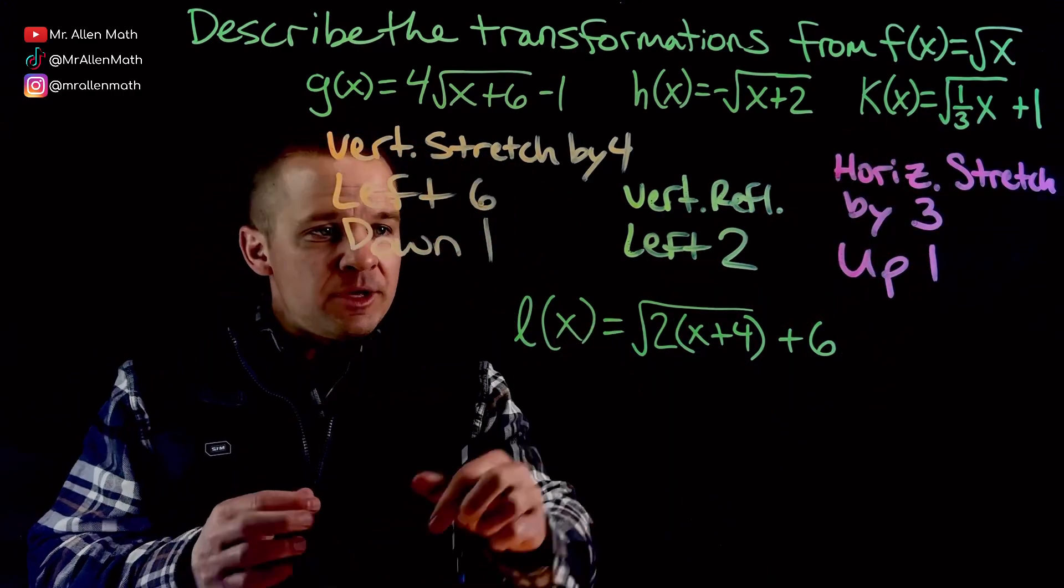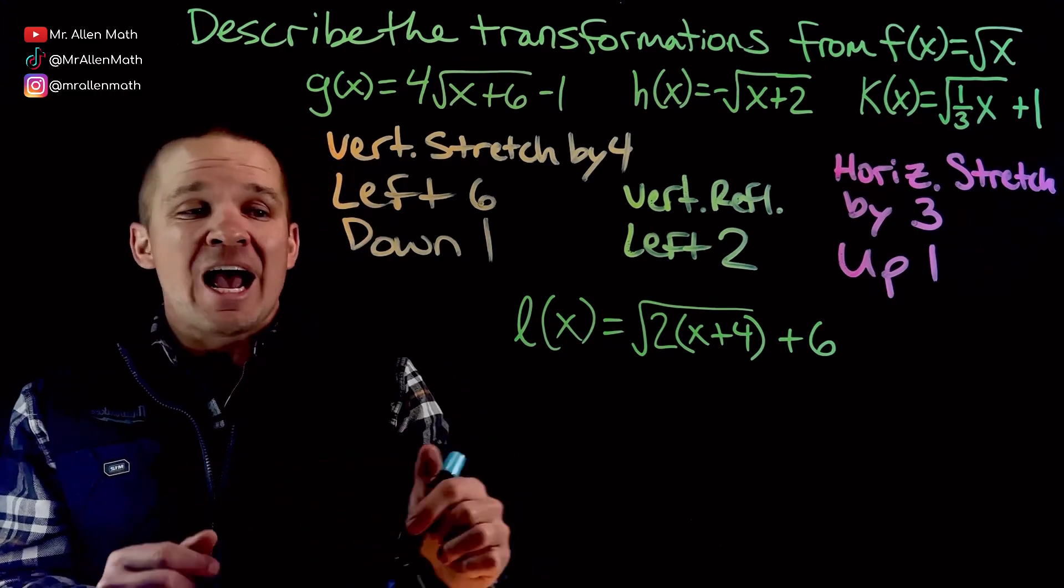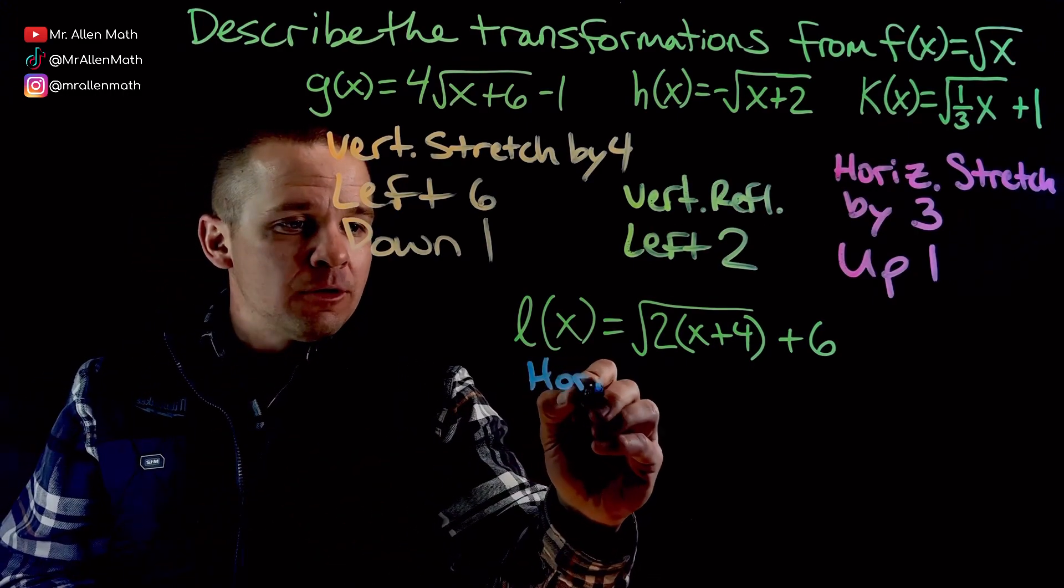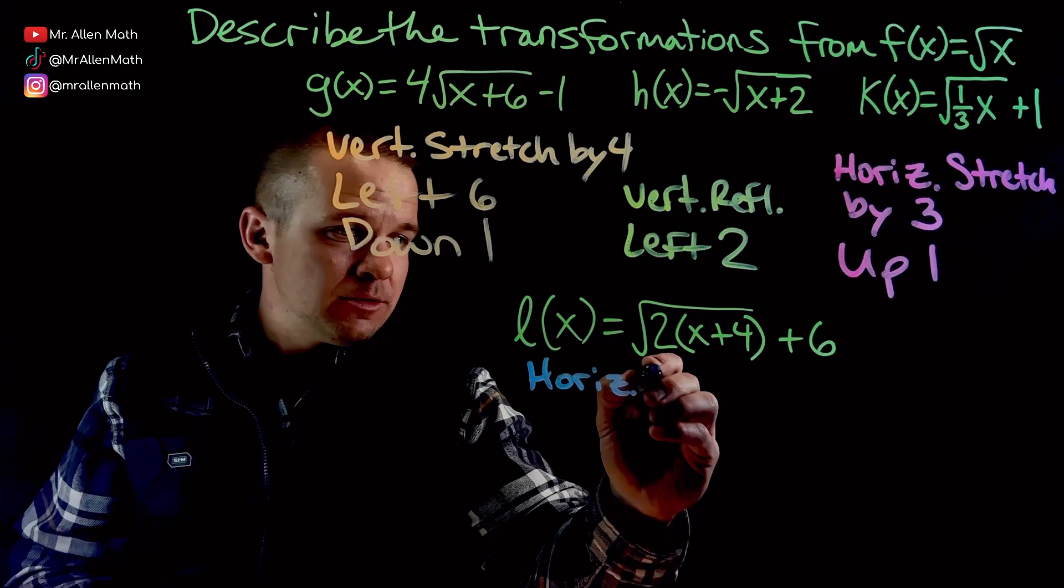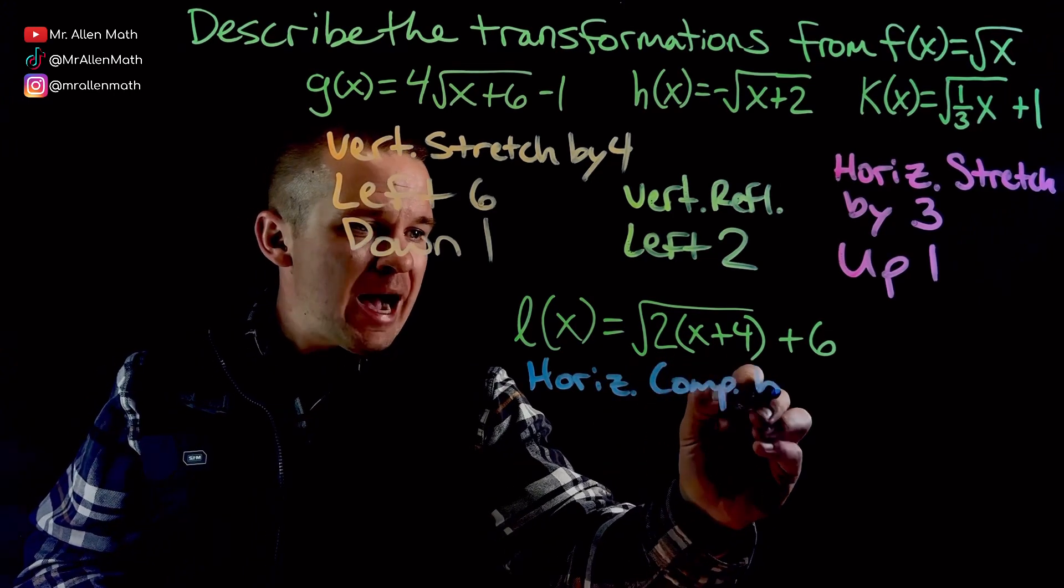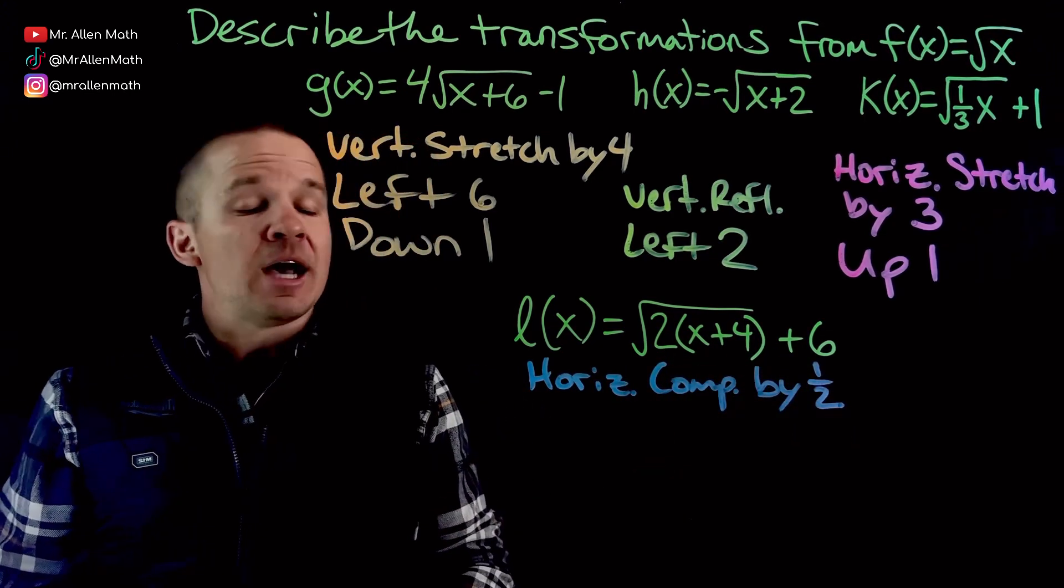Remember how the one third, flip it? Same thing goes with this 2 now. So it's going to be a 1 half. My factor's going to be a 1 half, which makes it a horizontal compression by 1 half.